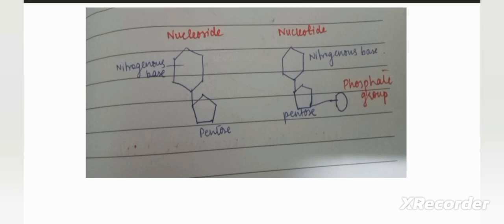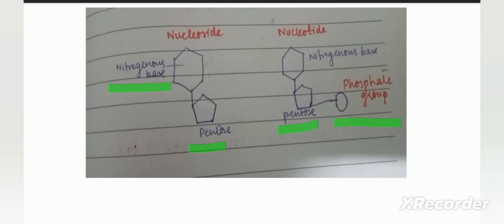The difference between nucleoside and nucleotide: in a nucleoside, the nitrogenous base is linked with the pentose sugar — it is a molecule without the phosphate group. A nucleotide is a molecule with the phosphate group, where the phosphate group is linked with the pentose sugar, which is also linked with the nitrogenous base. Without a phosphate group, it is a nucleoside; with the phosphate group, it is a nucleotide.